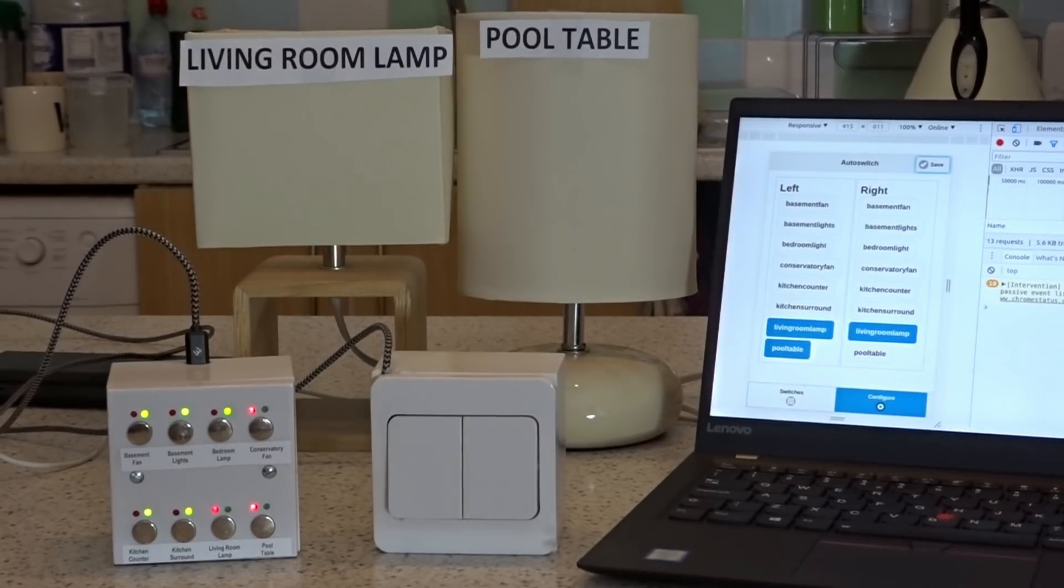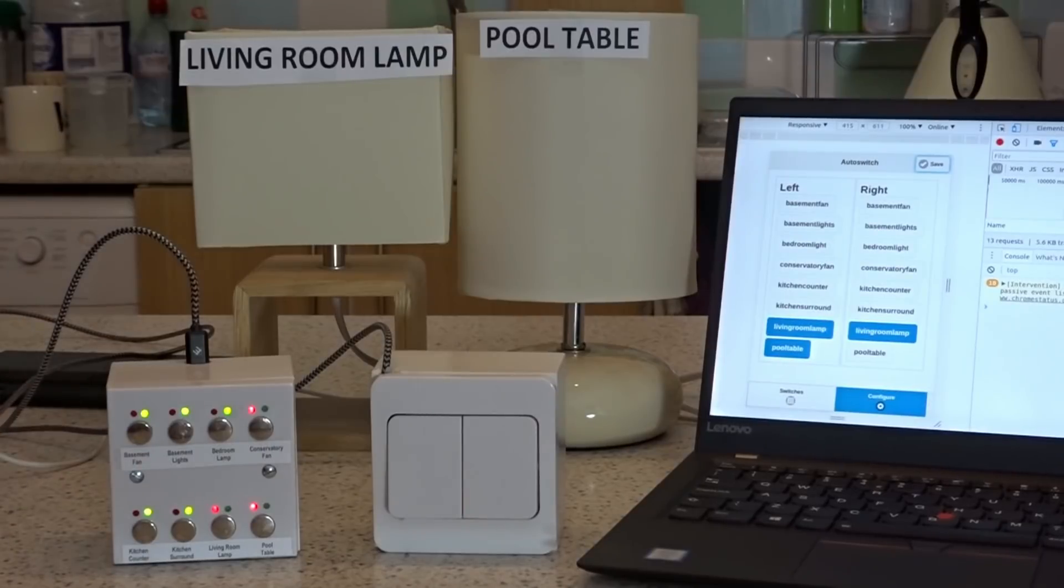Okay, so let's reprogram this to do the inverse. So let's move the pool table to the right hand side, take it off the left hand side and hit save.